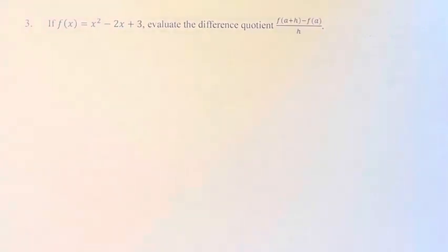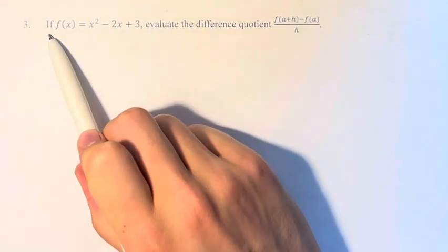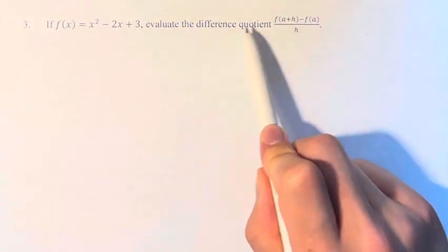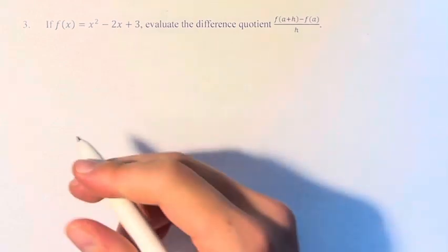Hello and welcome back to another video. In this problem, we're told if f(x) = x² - 2x + 3, evaluate the difference quotient [f(a+h) - f(a)]/h.